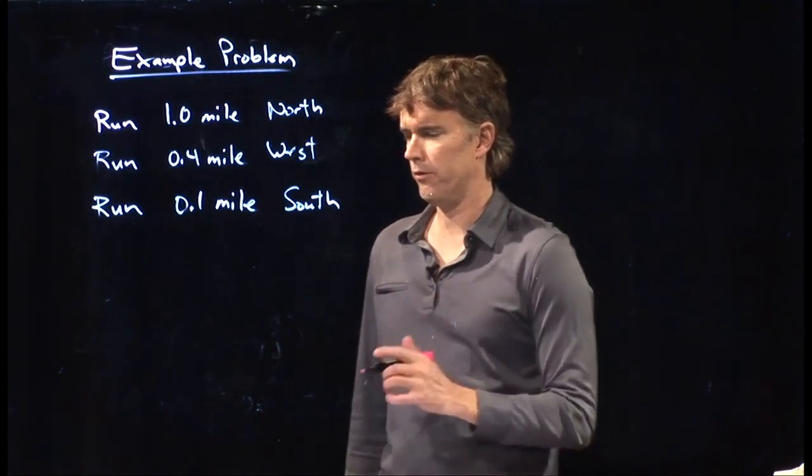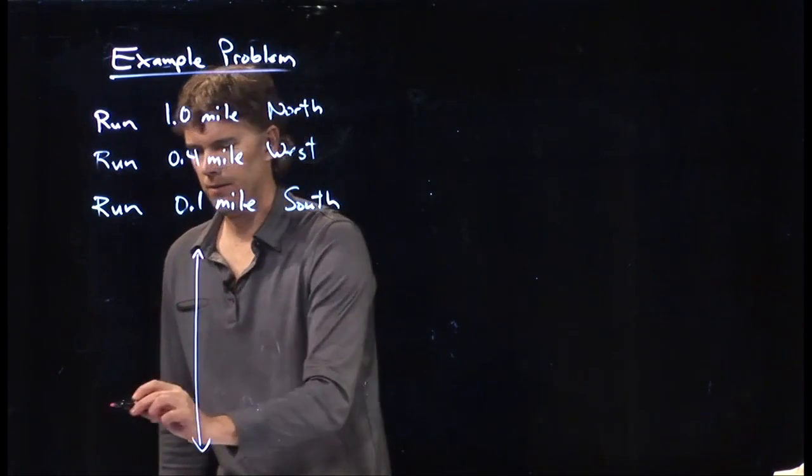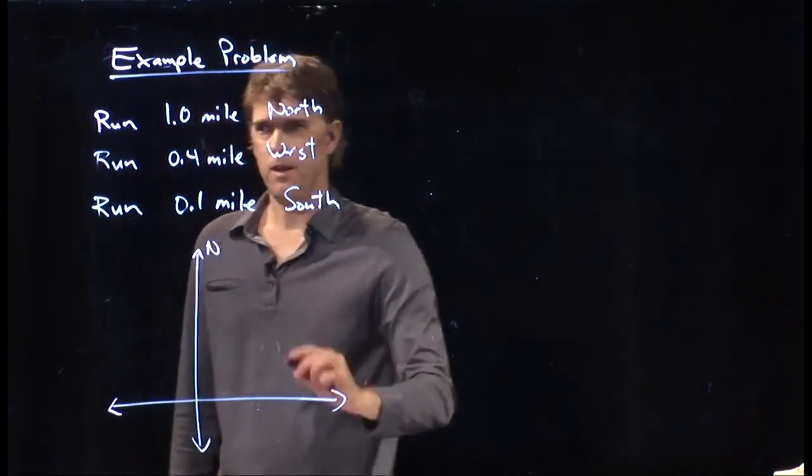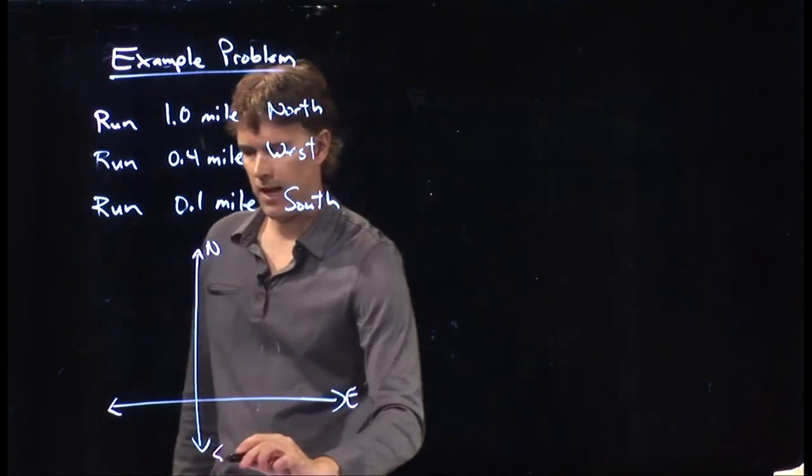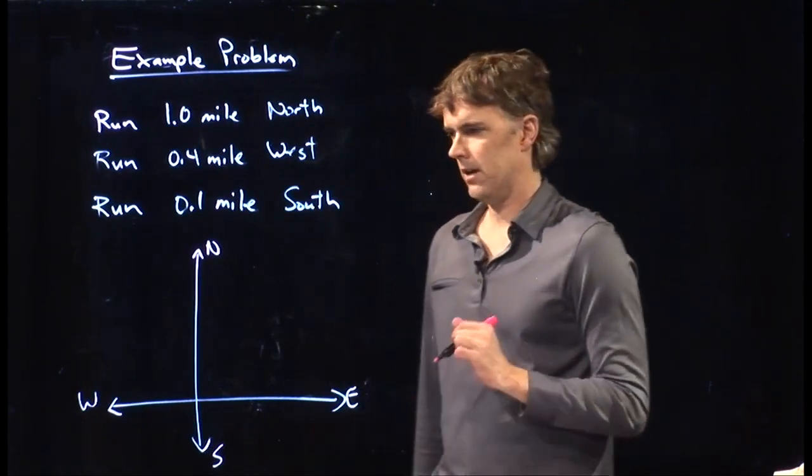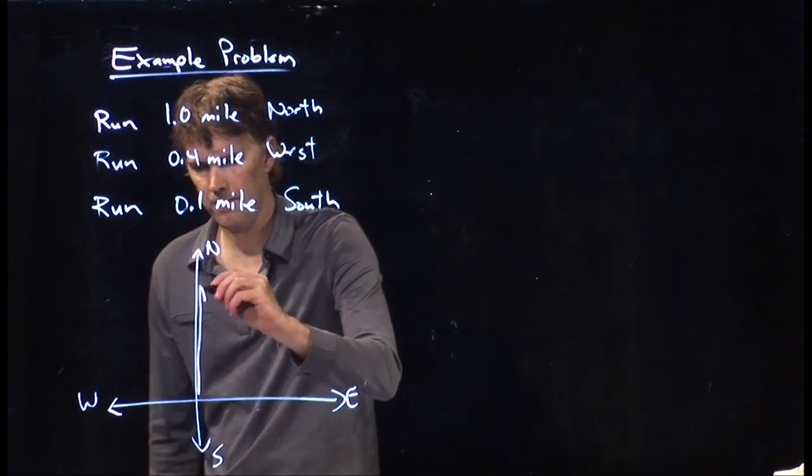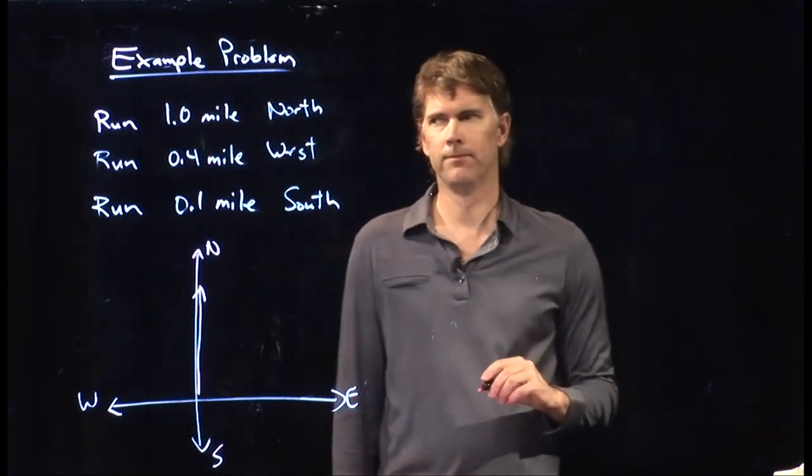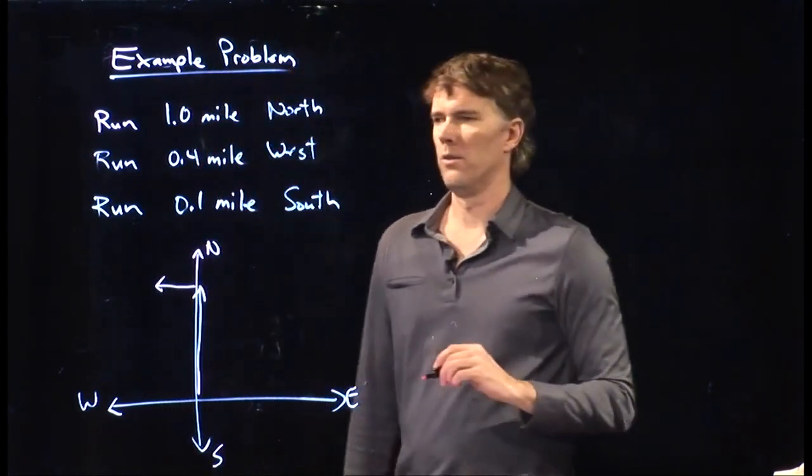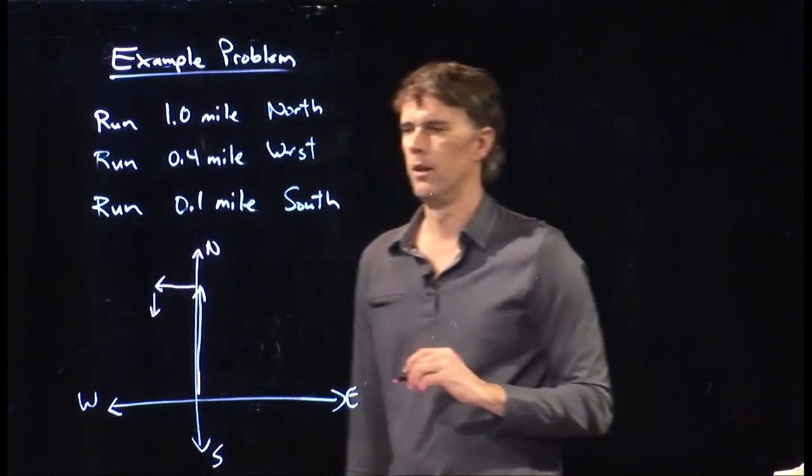Okay, so let's review our picture. We're going to run one mile to the north, then 0.4 miles west, and then 0.1 mile south. So our first leg of our journey is straight up one mile. And then we go 0.4 miles to the west, and then we go 0.1 miles south.